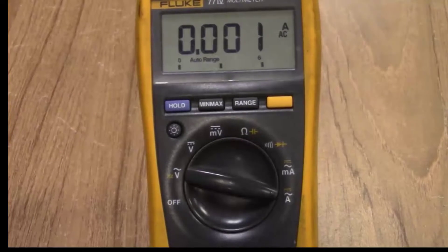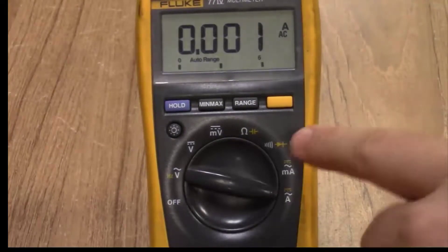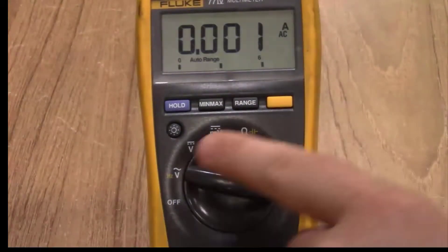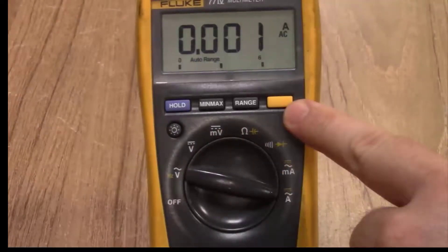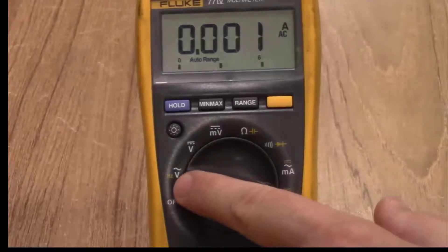Any other place that you see here on the dial that has a yellow indicator you can change between that setting and the one displayed in yellow using this button here. So you can go between voltage and hertz.